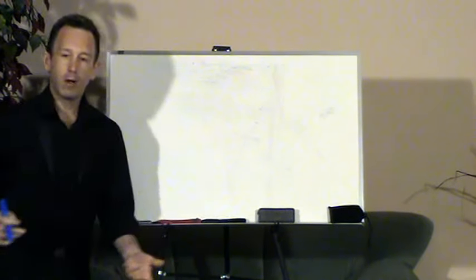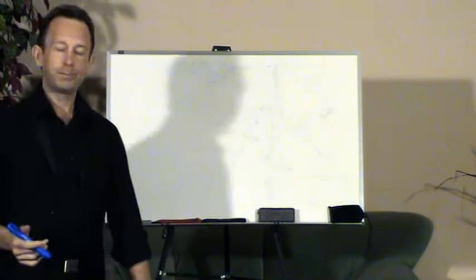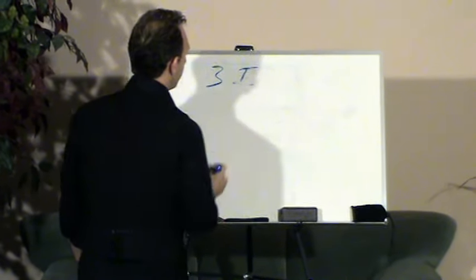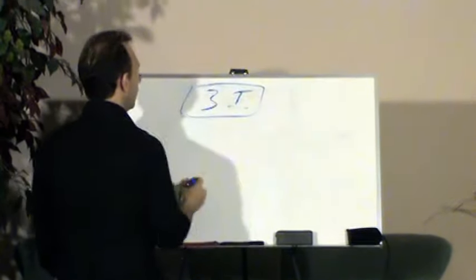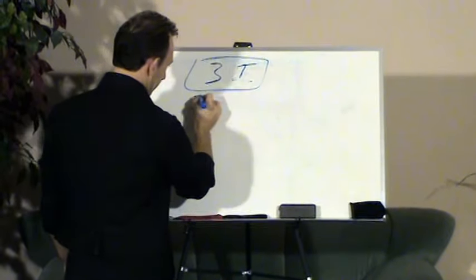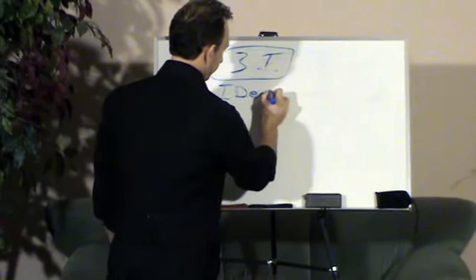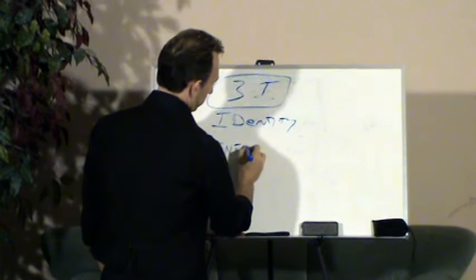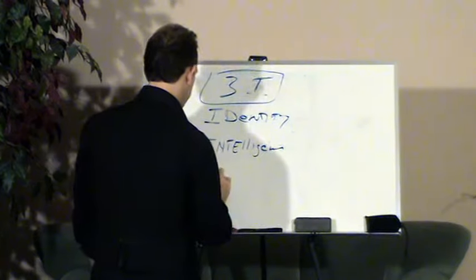But in the model of persuasion and influence that I teach, you have what I call the three-eye model. And that means identity, intelligence, and influence.